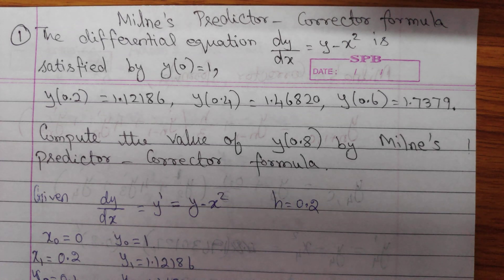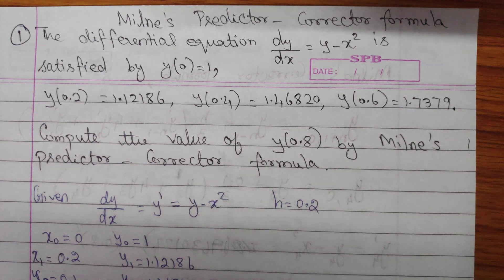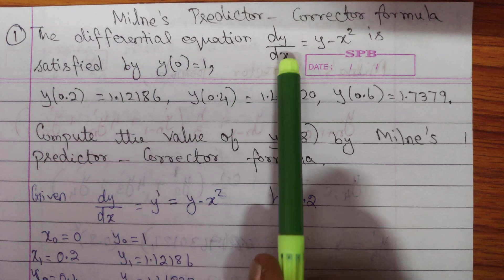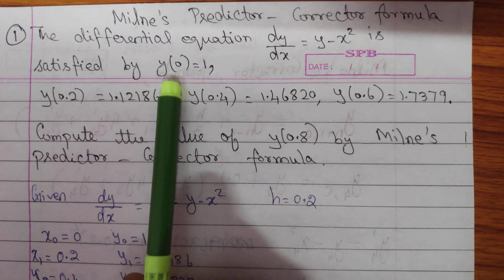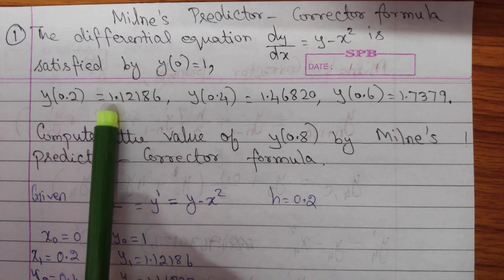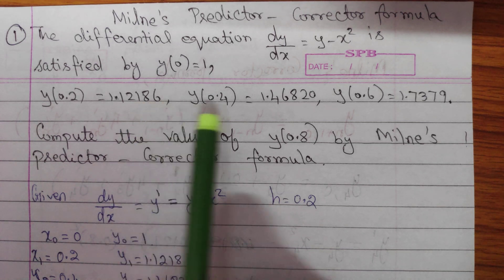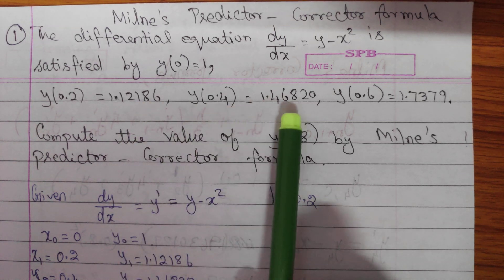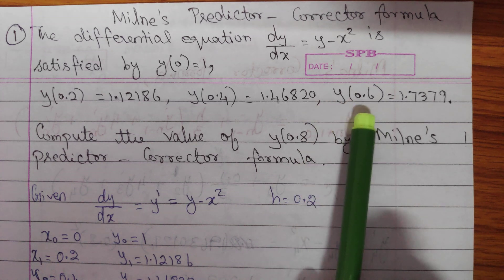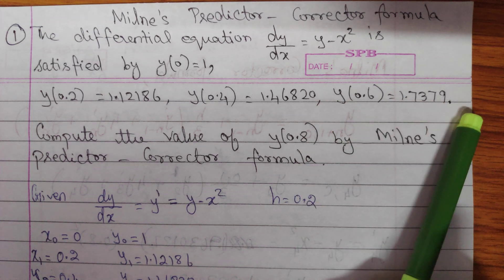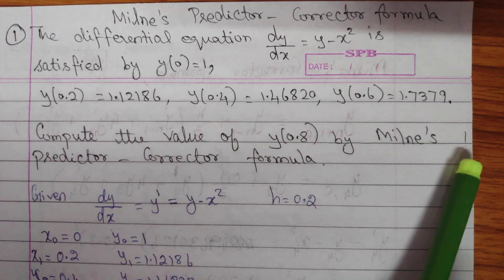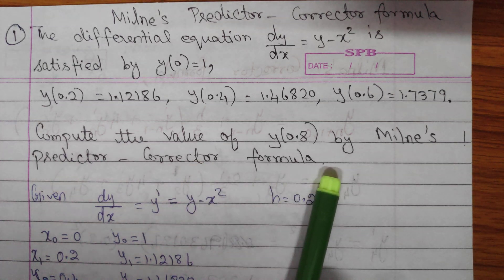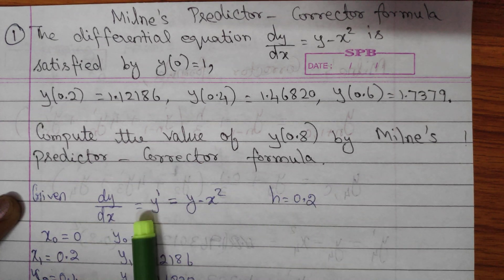In this video we are going to see Milne's Predictor and Corrector formula. The given question is the differential equation dy/dx equal to y minus x squared, satisfied by y(0) equal to 1. We have to compute the value of y(0.8) by Milne's Predictor-Corrector formula.